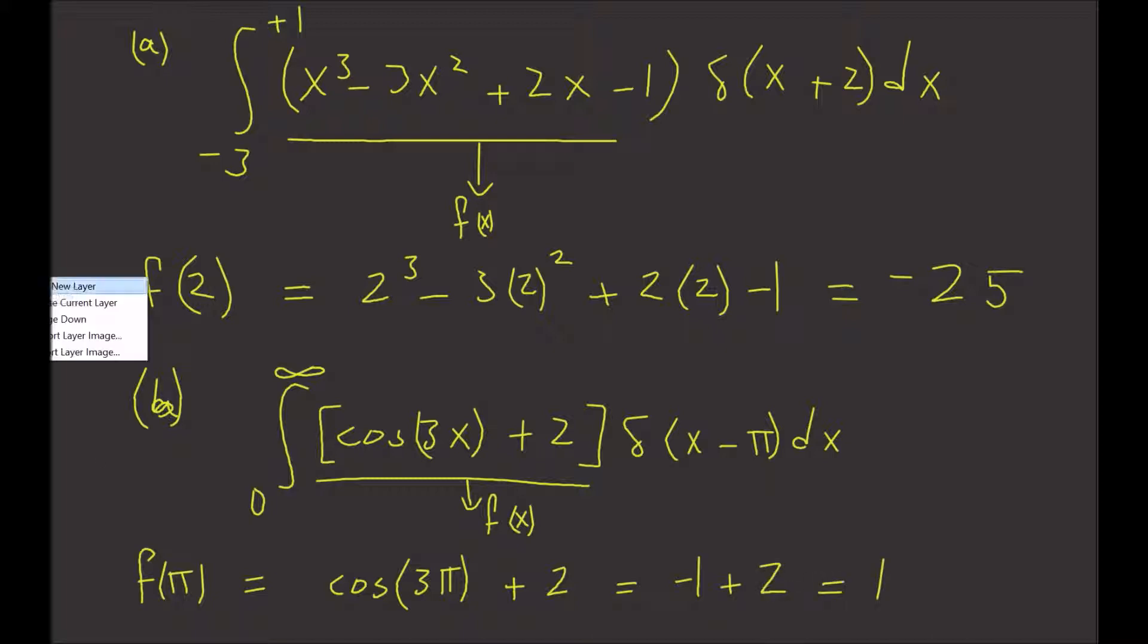And finally, so part c. We're going to look at the integral from -1 to +1 of the exponential e^(|x| + 3) times our delta function δ(x - 2) dx. Again, this is our function f(x).